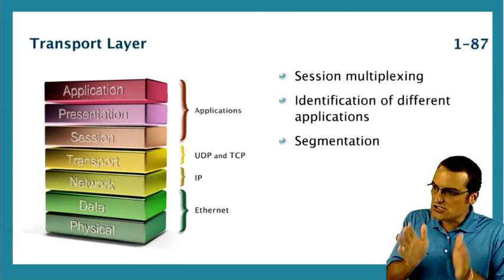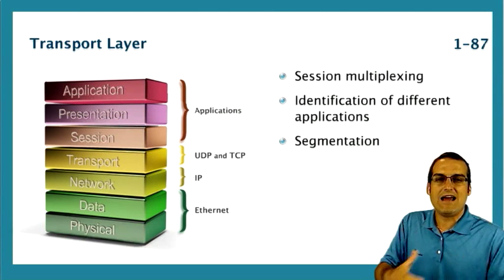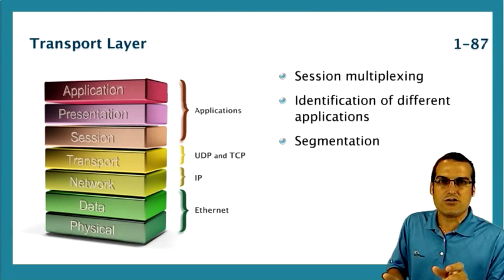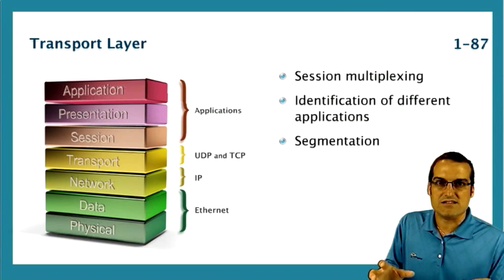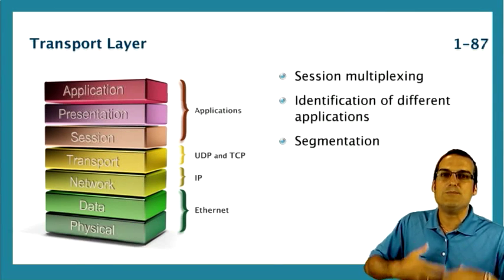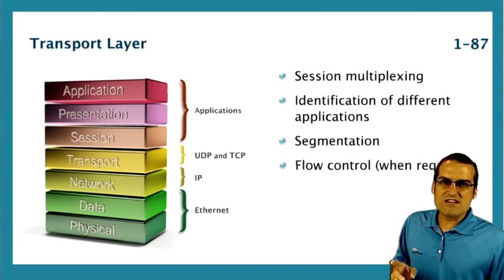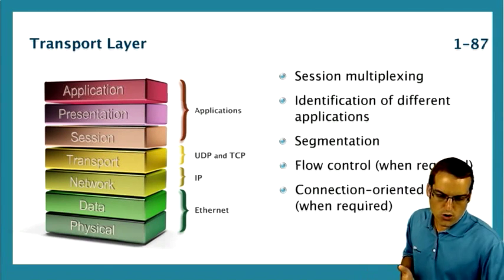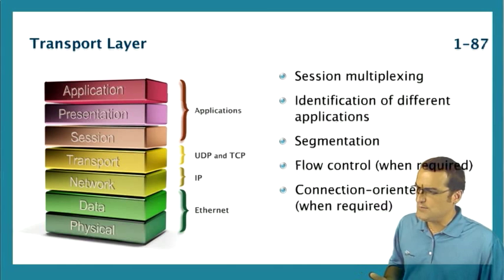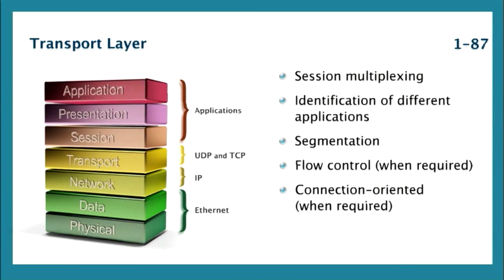Also, the transport layer is going to chop up the data and apply the appropriate PDU headers to give us segments, so we refer to segmentation as taking place here. Also notice that things like flow control, connection-oriented communications, and even reliability can all be jobs of the transport layer — but notice here it says 'when required.' What's up with that?